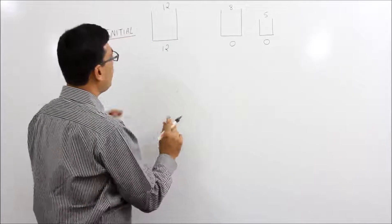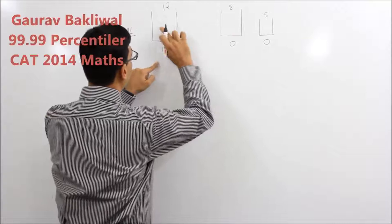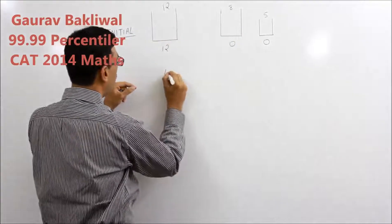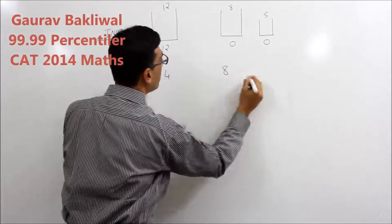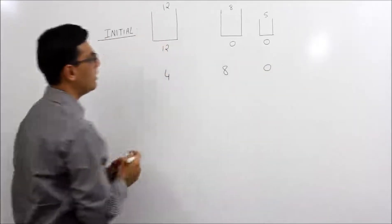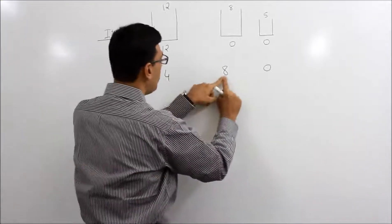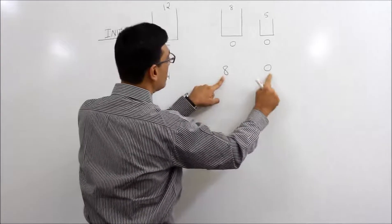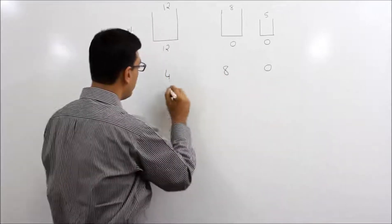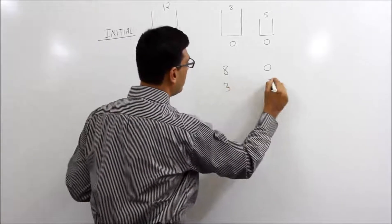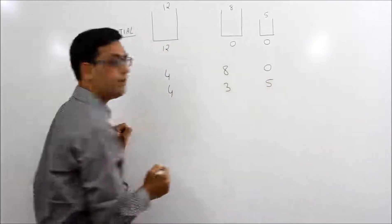So first step, we put this entire 12 litre jar in the 8 litre jar. So it will become 4, 8 and 0. This is the condition after first step. Now what we do is, we put this 8 litre in this third jar, 5 litre. So it will become 4 as it is, this is 3 and this is 5. This is second step.